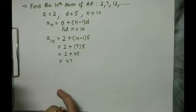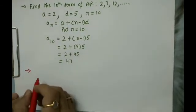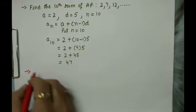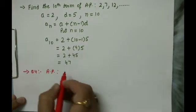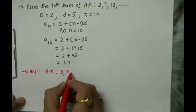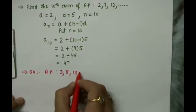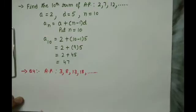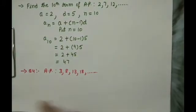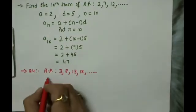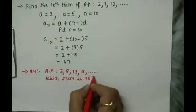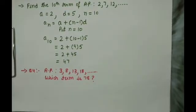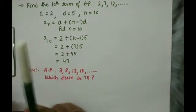Now let's do a few questions from the exercise for more clarification on how to use this formula. Question number 4 from the NCERT book: the AP given is 3, 8, 13, 18, and so on. The question is: which term of this AP is 78? We need to find which term equals 78 using the formula a_n equals a plus n minus 1 into d.